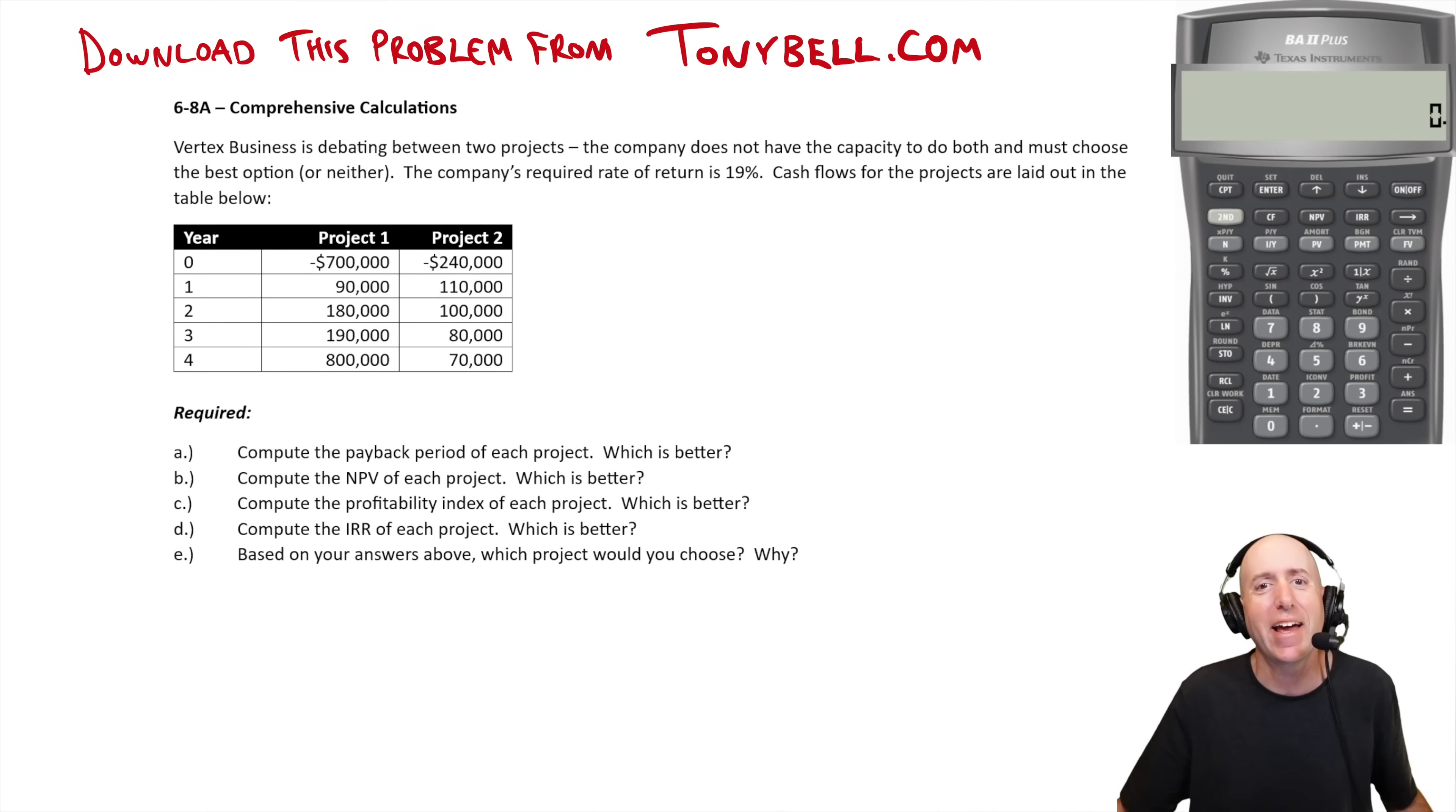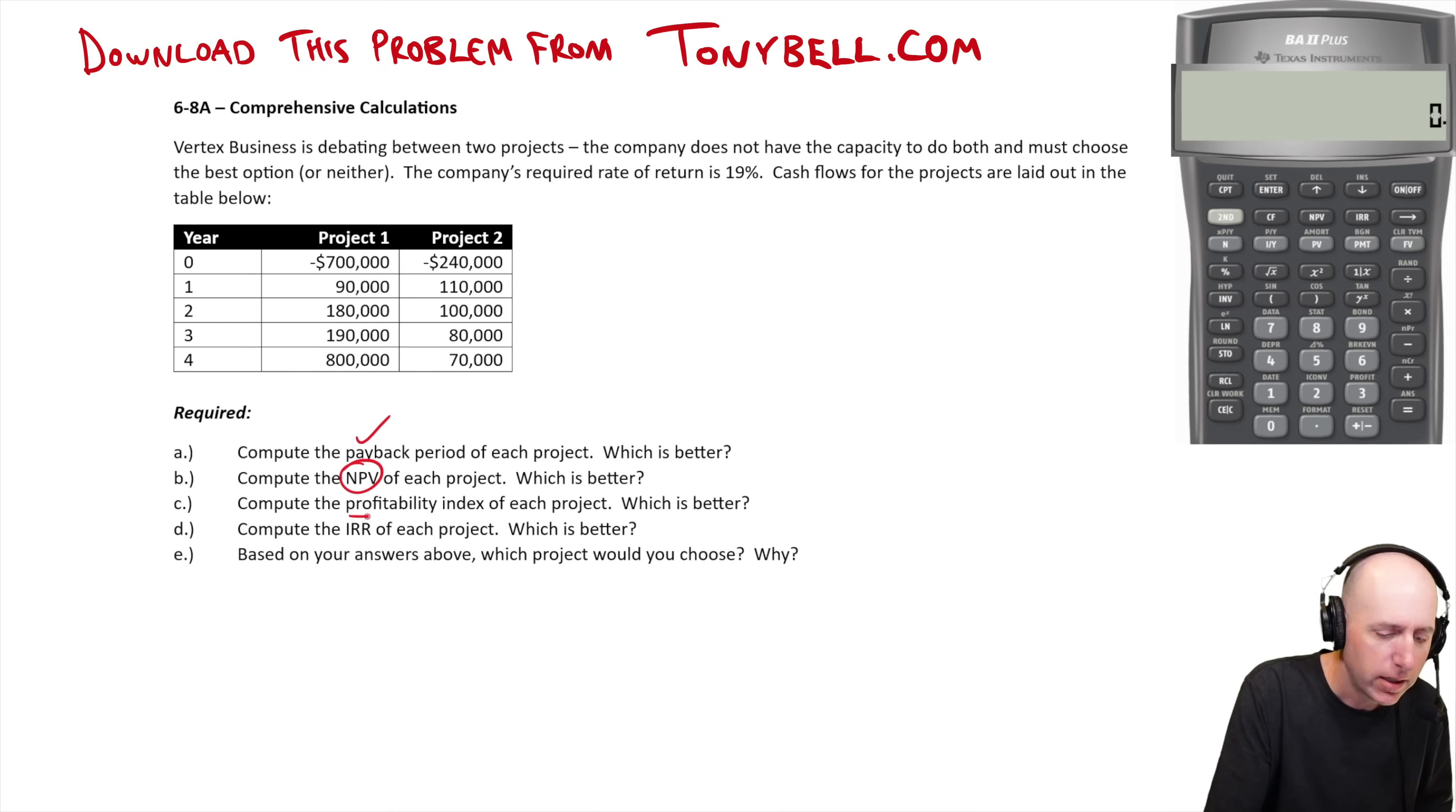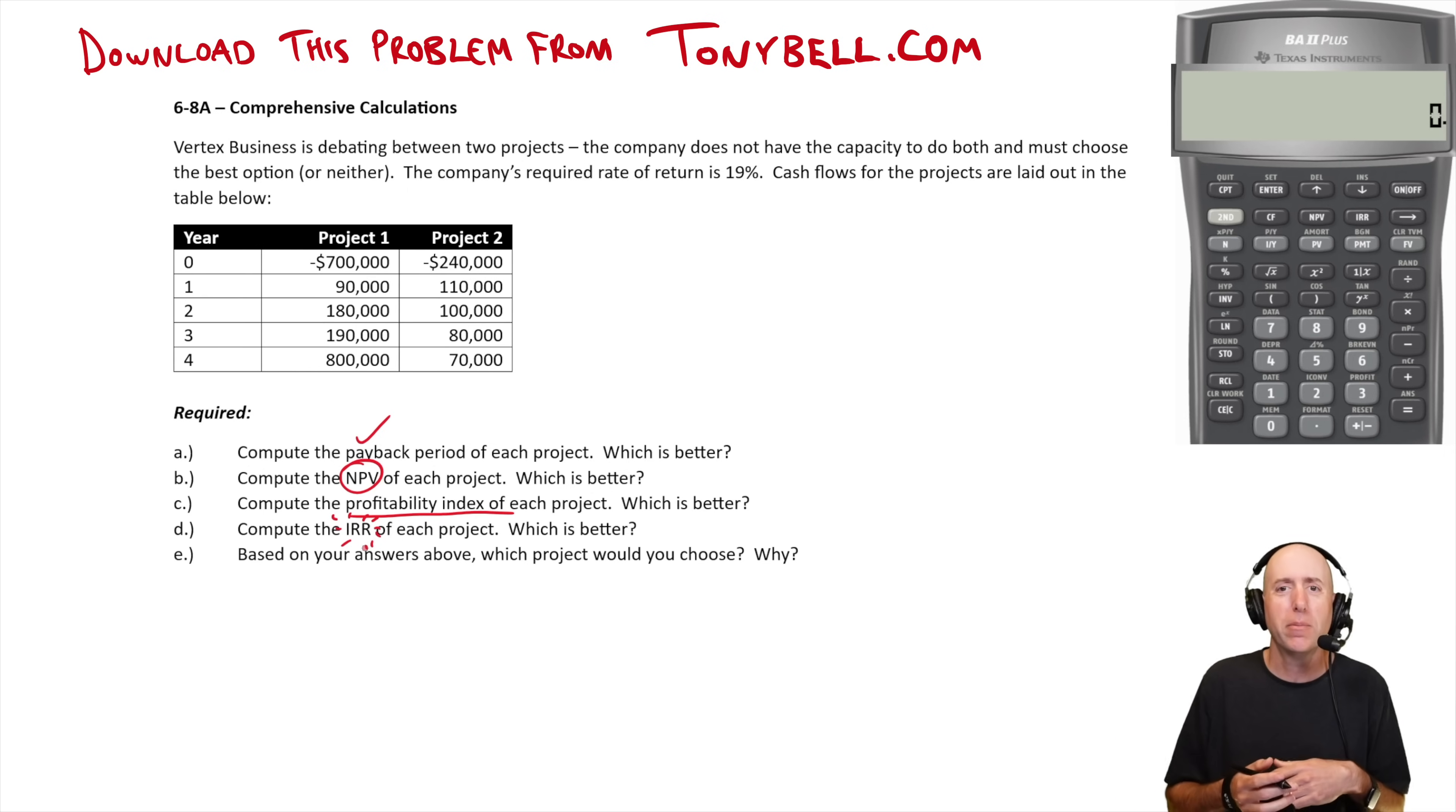Let's examine problem 6.88. This has us doing lots of calculations. It's a great practice question because you've got to do payback period, you've got to do net present value, you've got to do profitability index, and you've got to do IRR, internal rate of return. This is a kitchen sink type of a problem, but it's a nice sort of summary problem for most of the things we've learned this chapter.